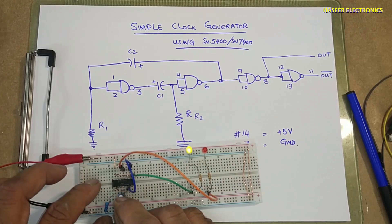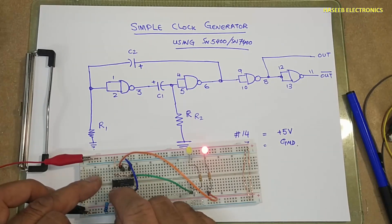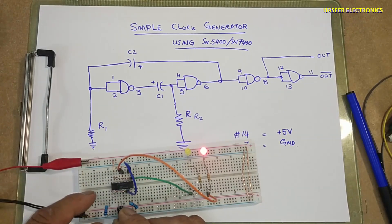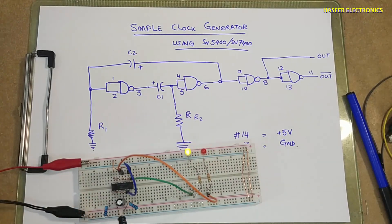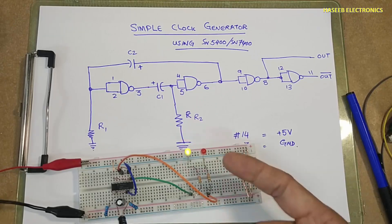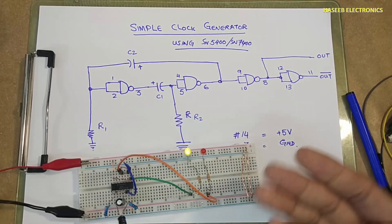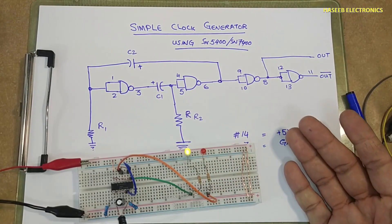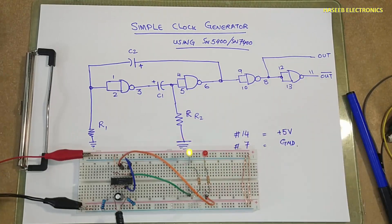Now if I will increase capacitor size to 470 microfarad and use 1 kilo ohm resistor, we can receive this clock signal so we can use it in projects. Thanks for watching.